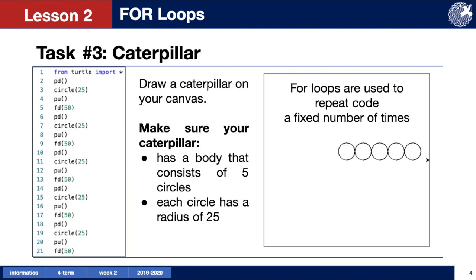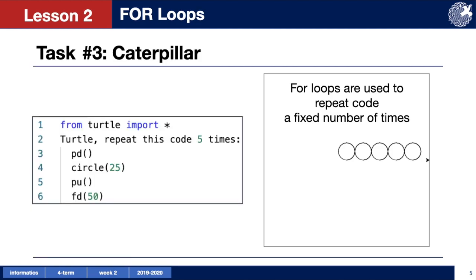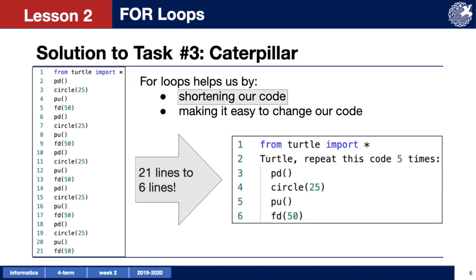For loops are used to repeat code for a fixed number of times. So instead of copying and pasting to create your caterpillar with 5 circles, you can just tell the turtle to repeat the code to make a circle 5 times. This helps us a lot when we need to repeat something many times, because all we need to do is write how many times we want the code to repeat. Making a caterpillar with 100 circles is now as easy as making one with 5. Loops help us by shortening our code, which is something all programmers want to do because this makes our code easier to read.